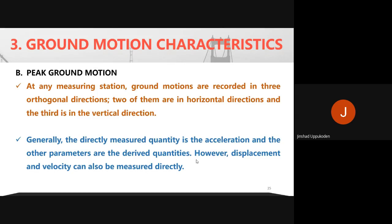At each instrument station, ground motions are recorded in all three directions: two horizontal and one vertical (three orthogonal directions). The directly measured quantity is usually acceleration, from which displacement and velocity are derived. Instruments that directly measure displacement and velocity can also be kept at instrument stations.